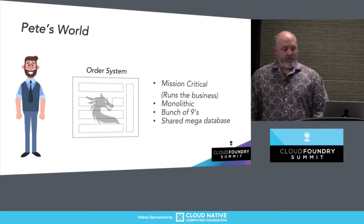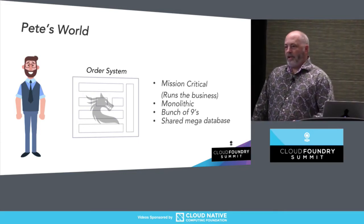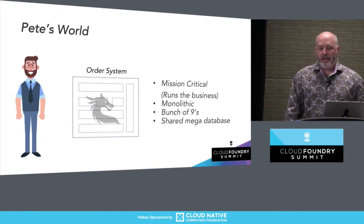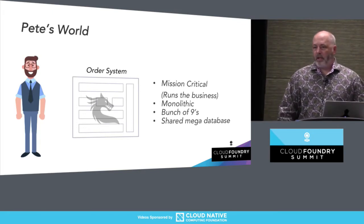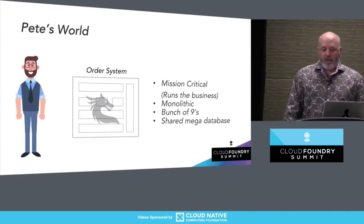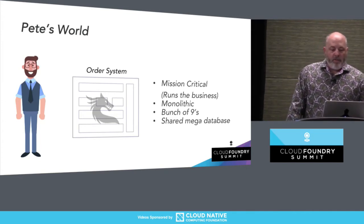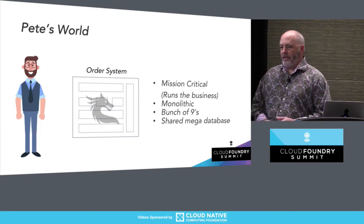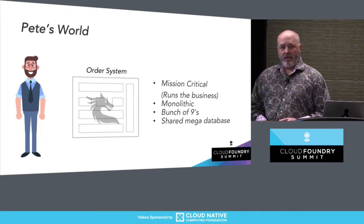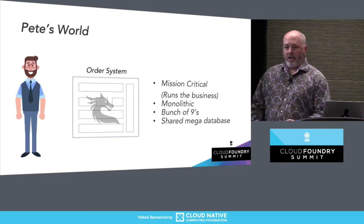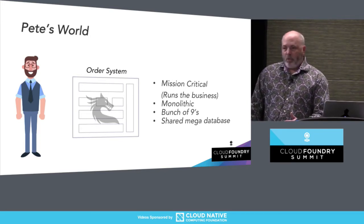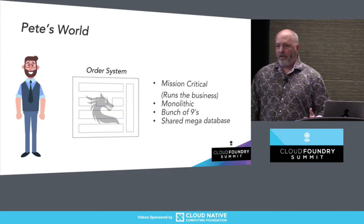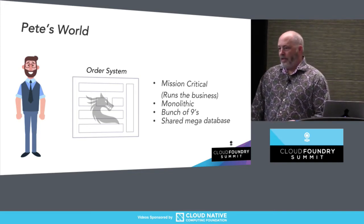This system is mission critical — it runs the business. It's also monolithic and it needs to be up. A whole bunch of nines — however many nines you want after the decimal point, that's what Pete's bosses say. And it shares a mega database, which contains the god tables. It's the storehouse of the world, basically. And Pete knows that changing applications means, at some point, changing the data.